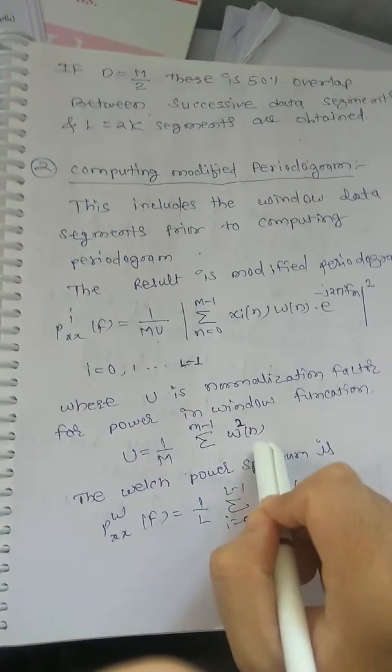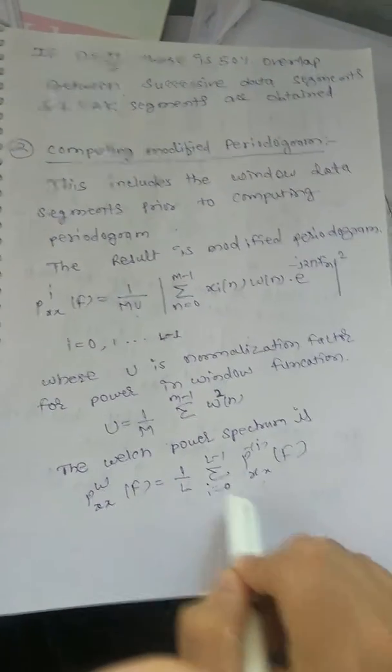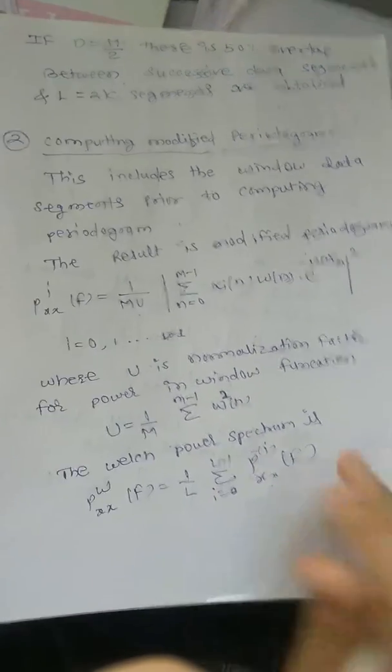By M summation M-1 omega square n, which Welch term is 1/L summation 0 to L-1 P_xs_i(f).